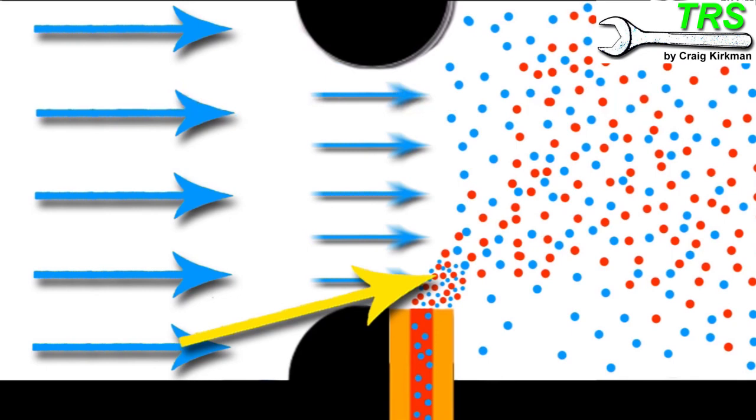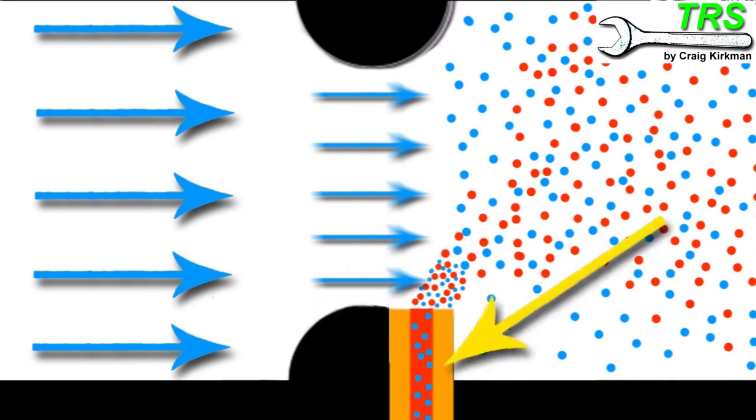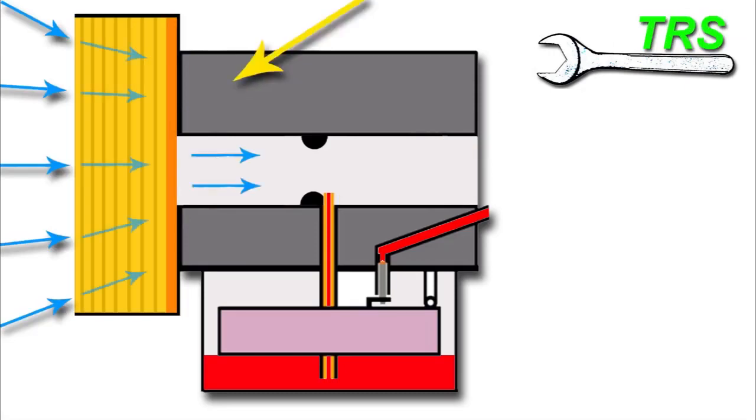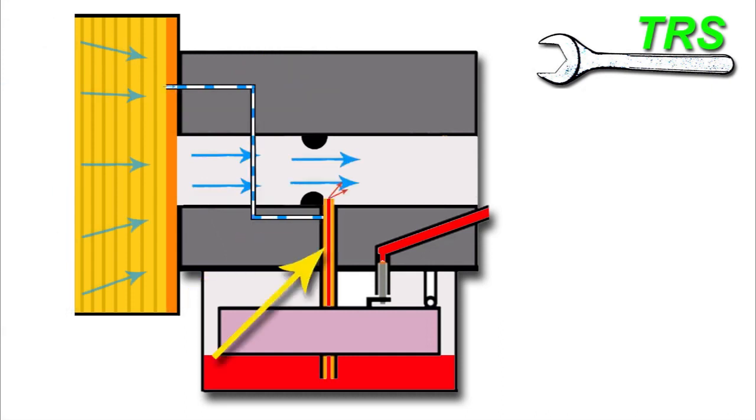The fuel goes through what's called an emulsification process within the main jet even before it comes out into the induction tube, and the way it does this is about how air enters the carburetor. As the suction pressure caused by the engine draws it through the air filter and into the induction tube, it also sends it down a separate channel way connected to the main jet.